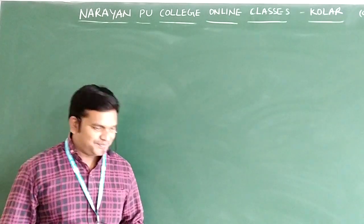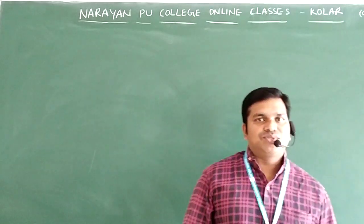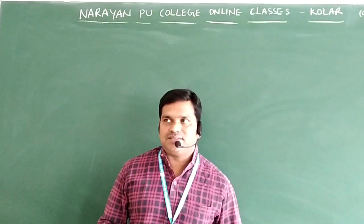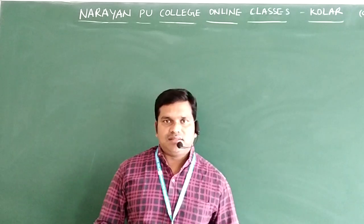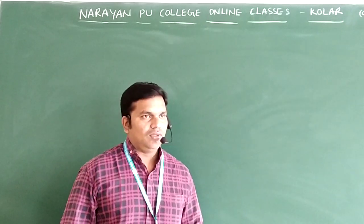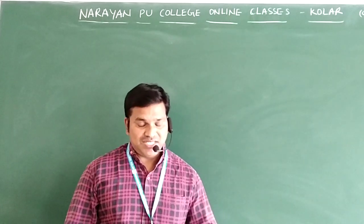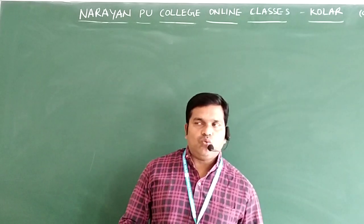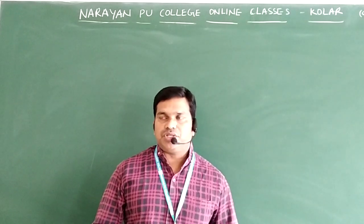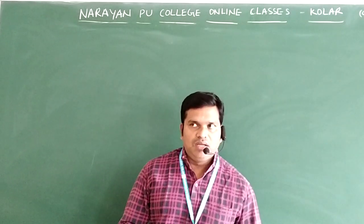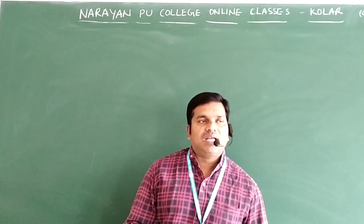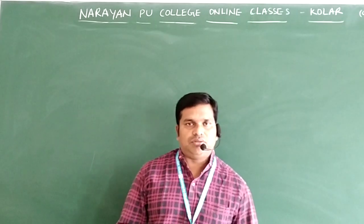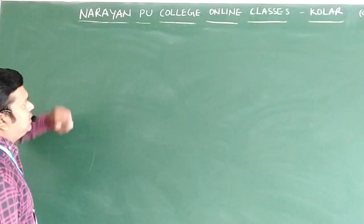Welcome to another online class. In the previous episode we already discussed some formulas related to the van't Hoff factor. The formula is: i = 1 + (n-1)·α and i = 1 + (1/n - 1)·α. These two formulas are used to calculate the van't Hoff factor when the degree of association or dissociation is given.